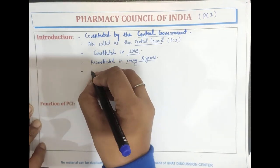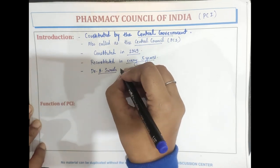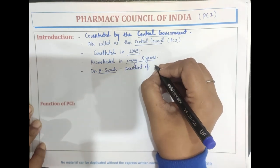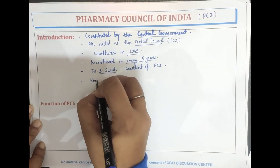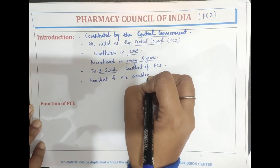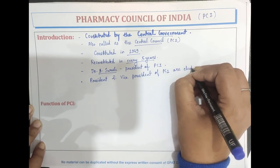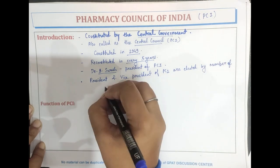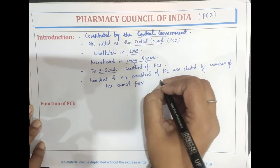Dr. B. Suresh is the President of PCI, Pharmacy Council of India. The President and the Vice President of the PCI are elected by the members of the Council from amongst themselves.